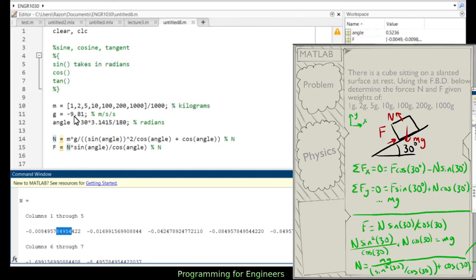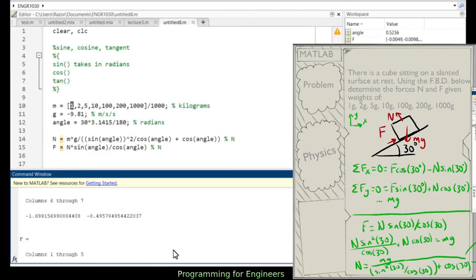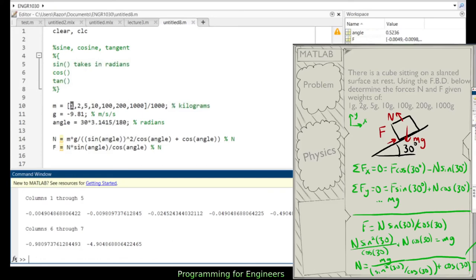So this is for a mass of one gram, this is for a mass of two grams, five grams, ten grams, hundred, two hundred, a thousand. So that's a reason we would use a matrix when we have a bunch of values.